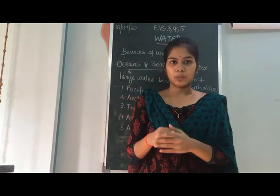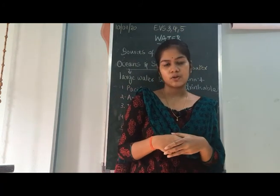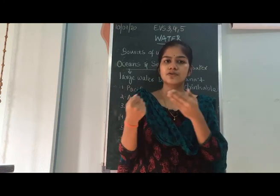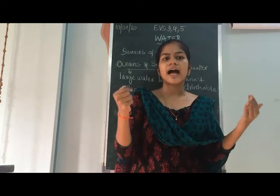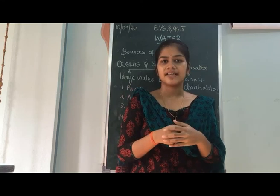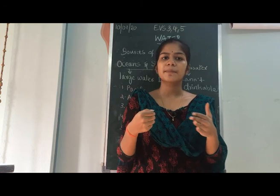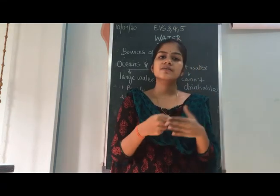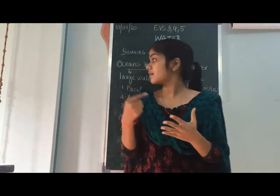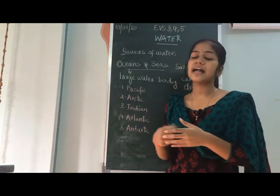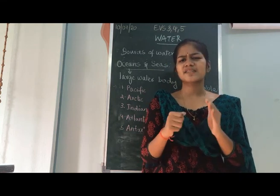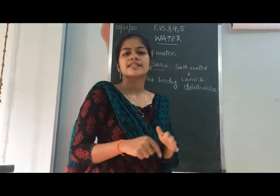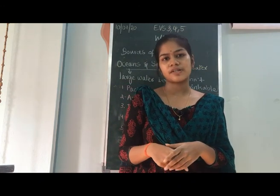Today in this class we have seen about water and the different sources of water. Rain is one source. Underground water is another source. Ponds, lakes, and wells are also sources. Rivers are of two types: rain-fed rivers, where rain collects and forms a river — examples are Godavari, Kaveri, and Krishna — and snow-fed rivers, formed from the melting of ice mountains — examples are Brahmaputra, Ganga, and Yamuna. Lastly, oceans and seas are large water bodies; there are five oceans — Arctic, Pacific, Atlantic, Indian, and Antarctic — and seas are smaller than oceans. Both contain salt water which is not drinkable. We will continue the next portions in the next class. Thank you.